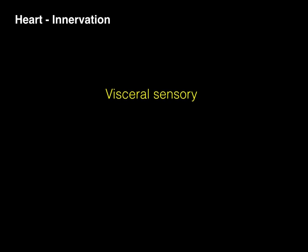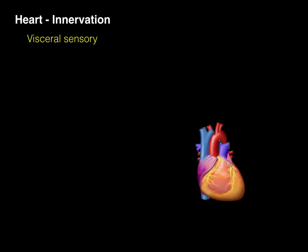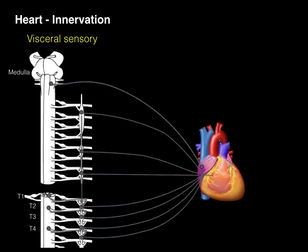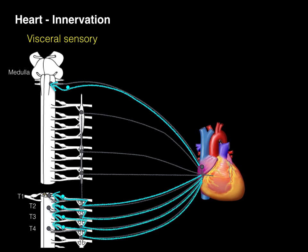Now let's talk about visceral sensory neurons. Visceral sensory neurons are found paralleling both parasympathetic and sympathetic pathways, and they travel in the opposite direction. There is a visceral afferent neuron paralleling the vagus nerve going from the heart to the medulla, which senses changes in blood pressure and blood chemistry like oxygen and CO2 concentration, primarily dealing with cardiac reflexes. There are also visceral afferents paralleling the sympathetic neurons at T1 to T4 and in the middle and inferior cervical ganglia. These sense ischemia, tissue damage, and stretching of the heart wall, mediating visceral pain in angina pectoris and myocardial infarctions.